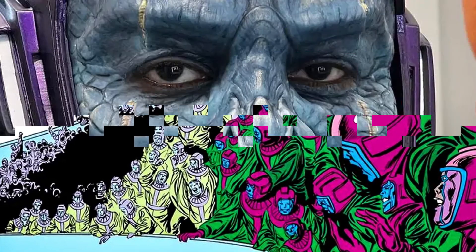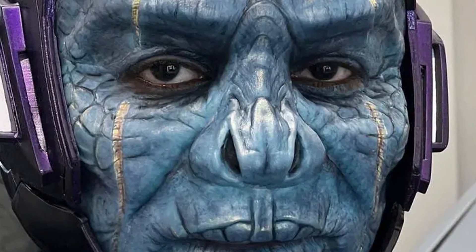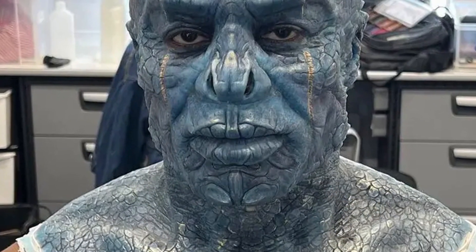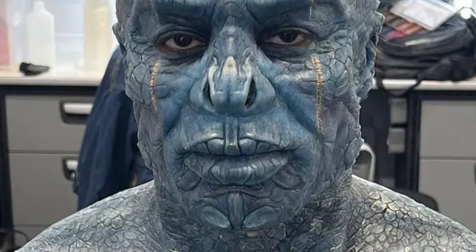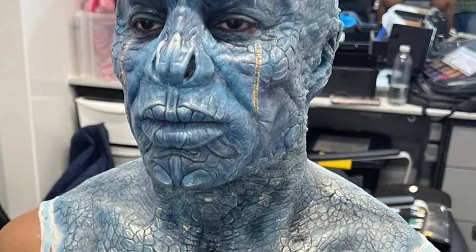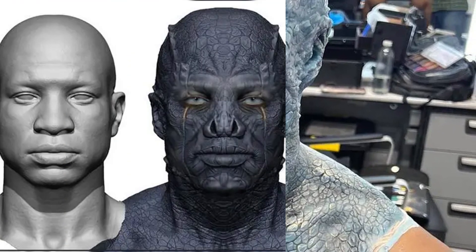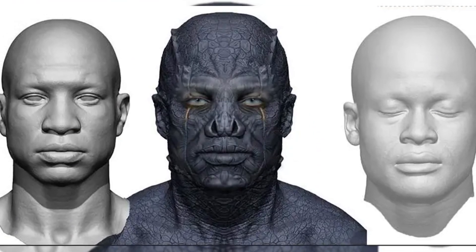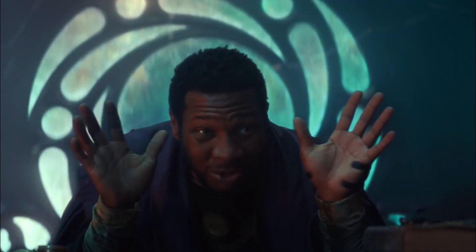The performer wore a full-face design and Kang-style clothing, suggesting that this appearance was entirely created using prosthetics rather than CGI. Even Kang's famous scars are there on the mask, but this time they are golden yellow to complement the lizard variant's blue skin. A digital drawing of this specific variation was also included in the post, demonstrating how it contrasts with Jonathan Majors' more human face.